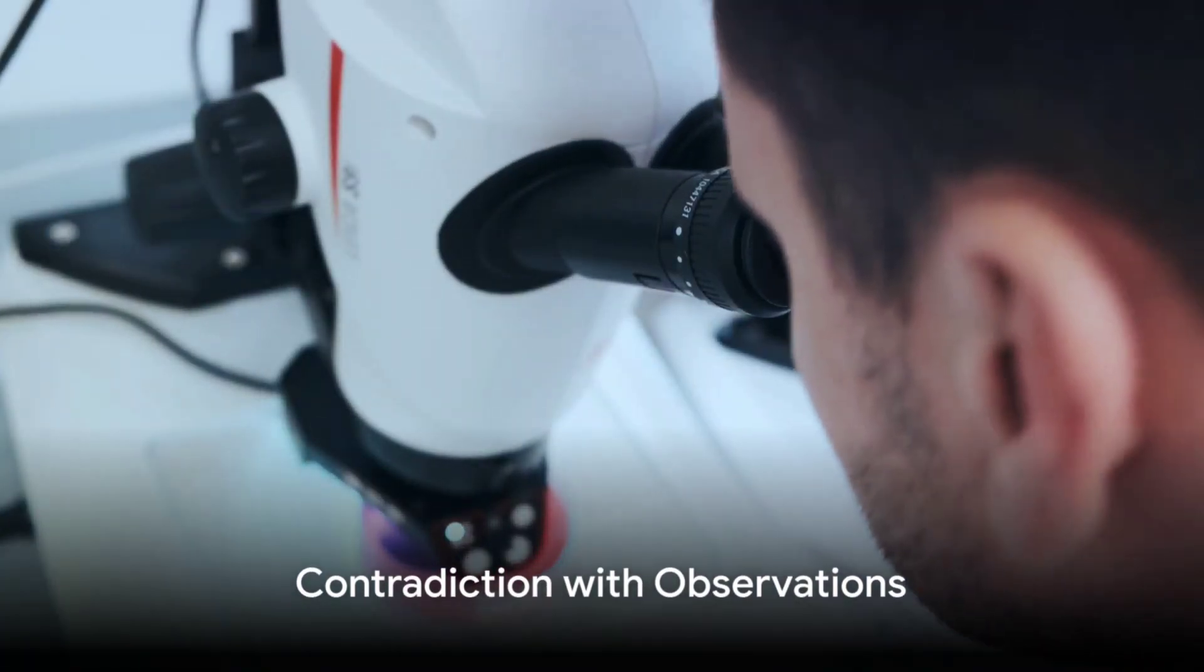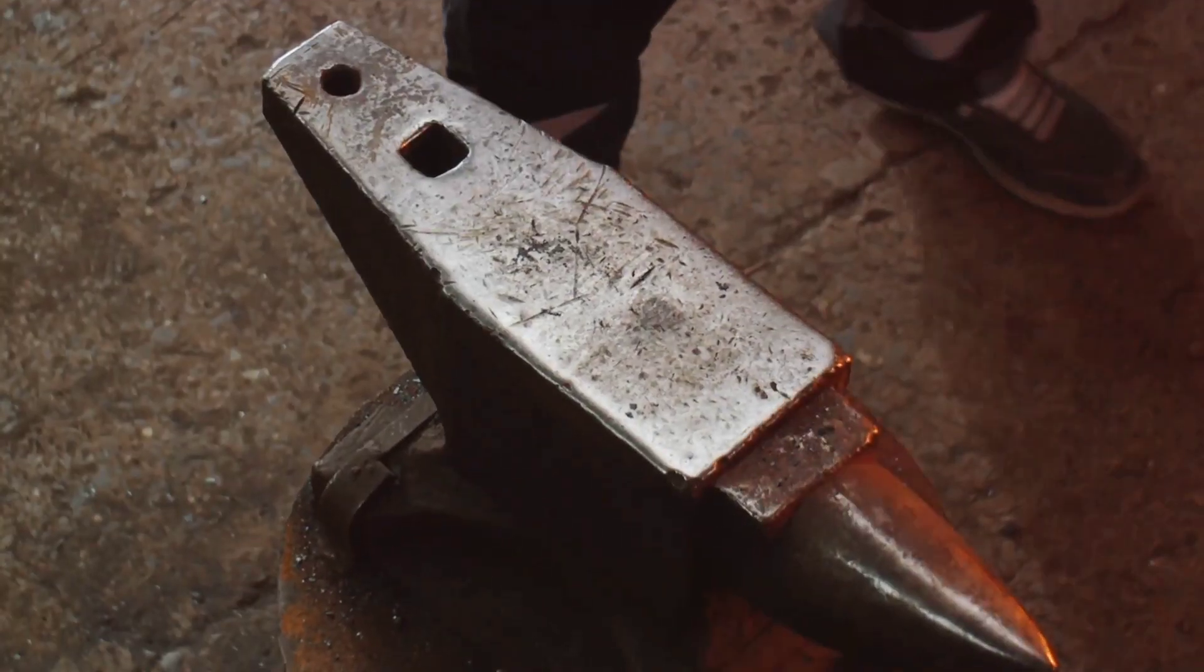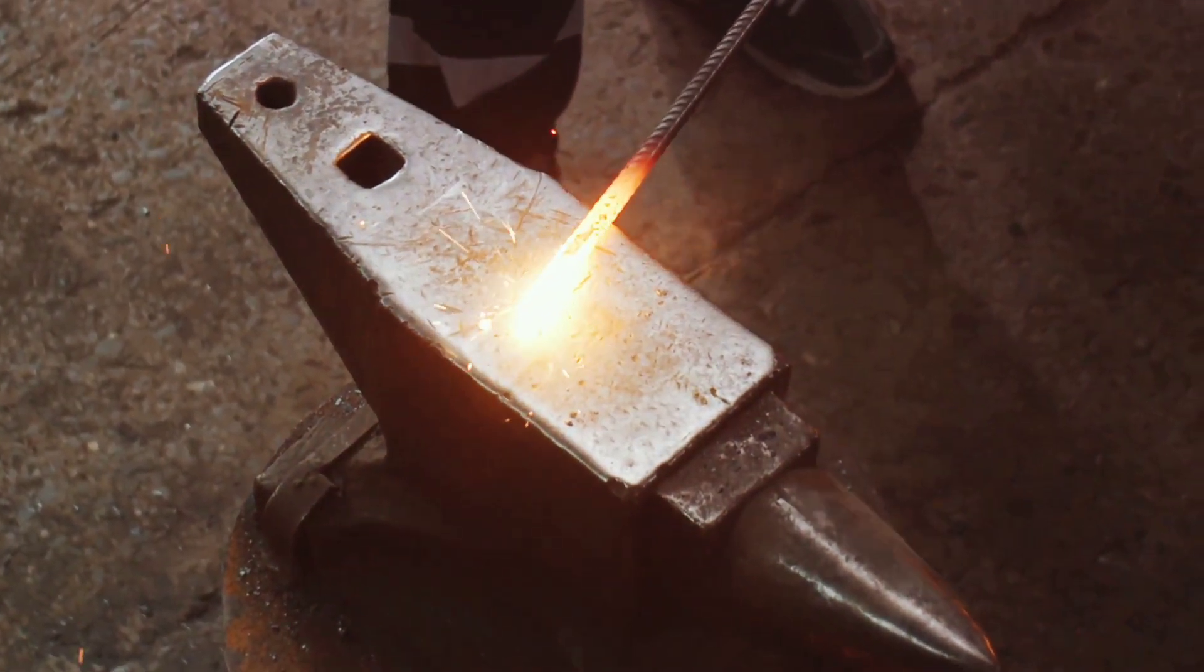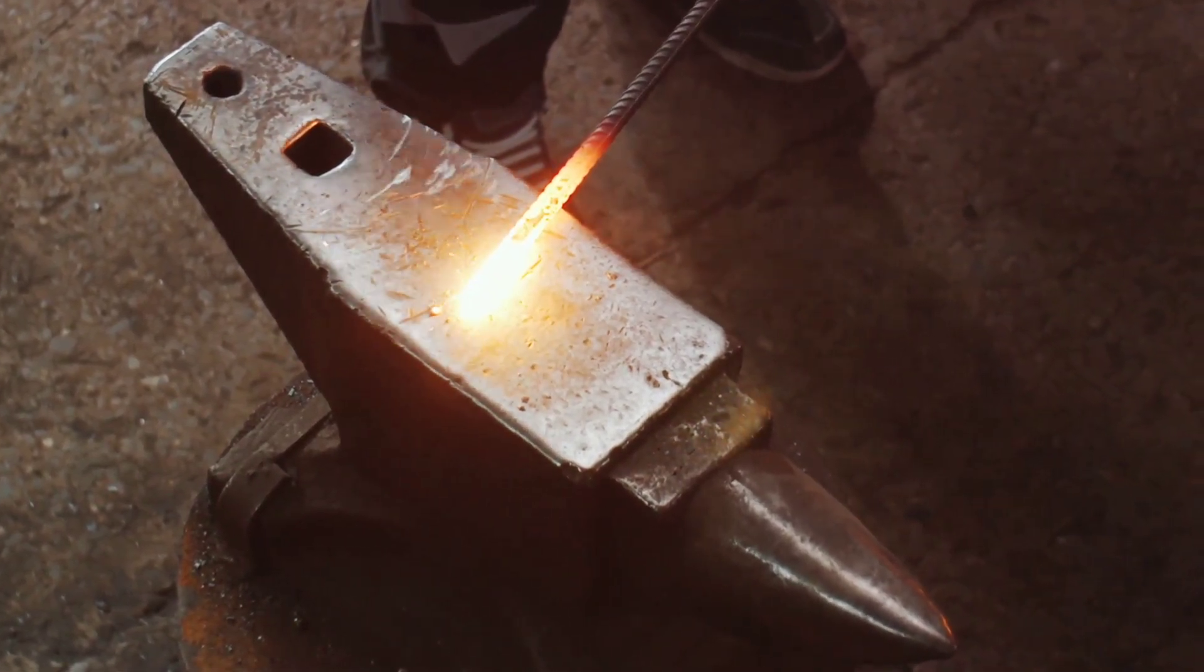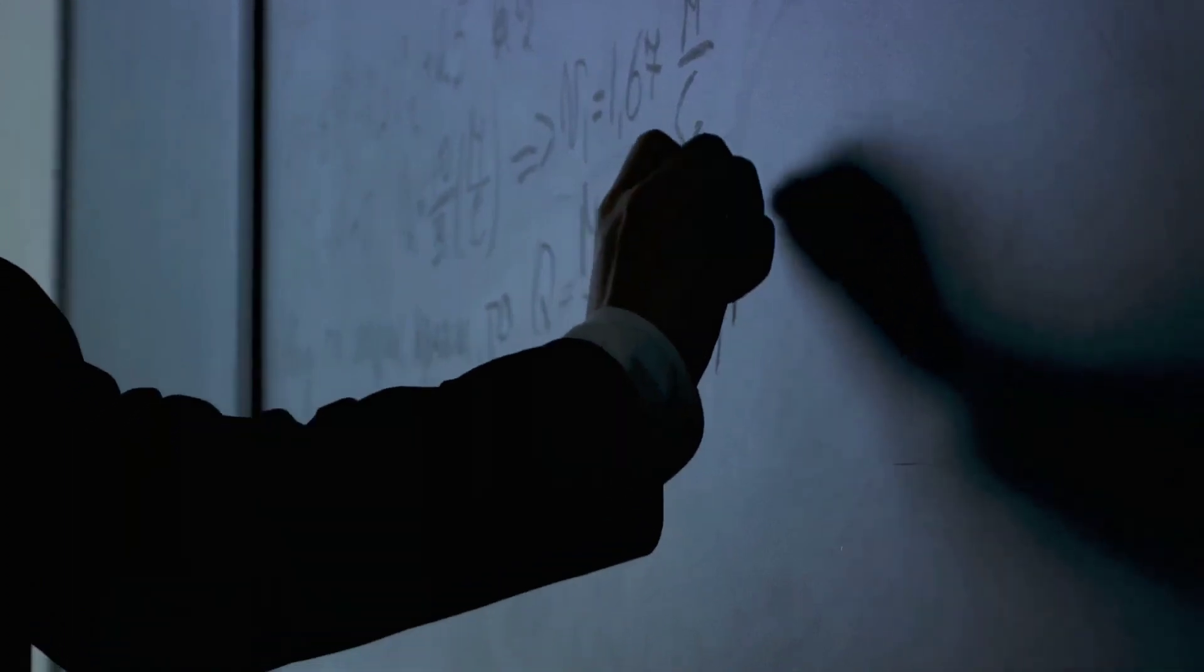But here's the catch. This prediction contradicts everyday observations. When you heat a piece of iron in a fire, it starts to glow red, then white as it gets hotter. But it never starts emitting ultraviolet light. So clearly, the classical physics prediction was wrong. But why?